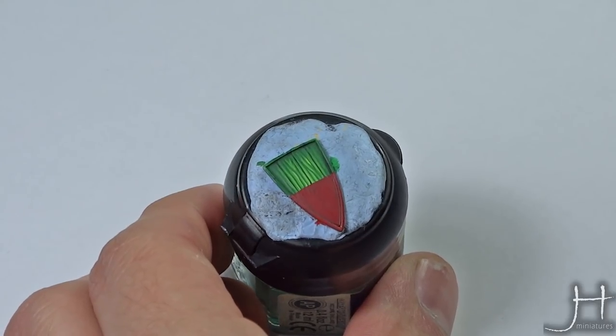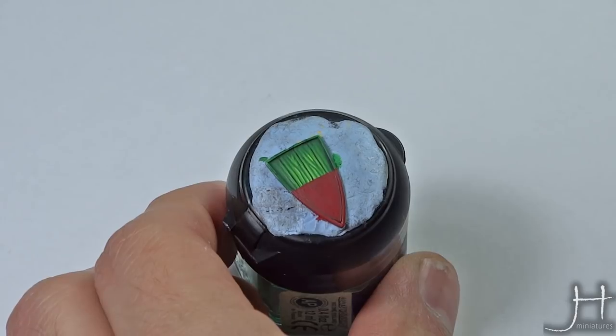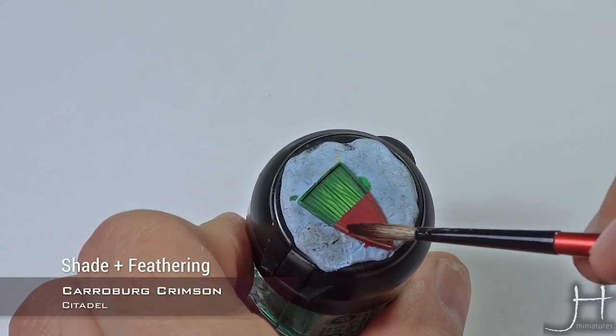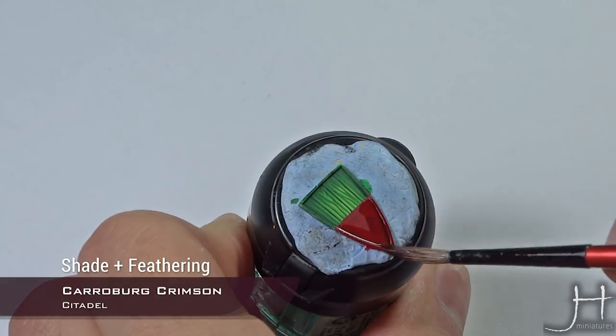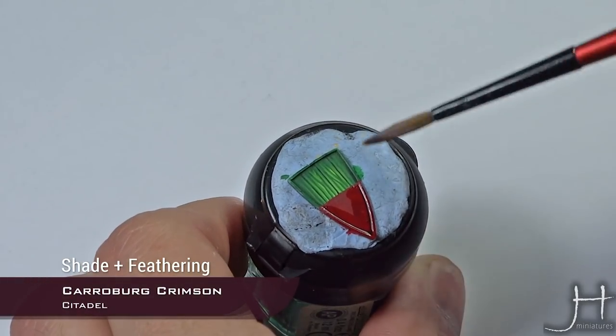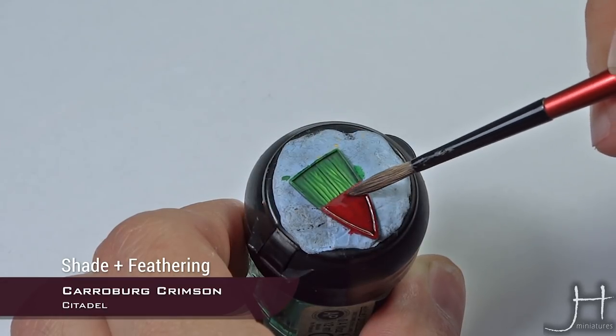The first coat of Carroburg Crimson is dry and then we'll apply a second one. We'll apply it, as you see, on the edges, just on the corners. Then I'll clean my brush and feather it out so it's nice.